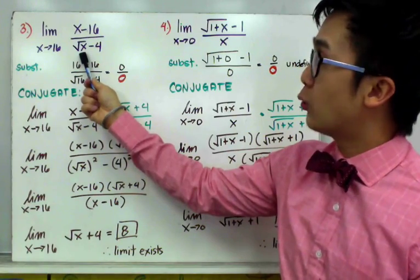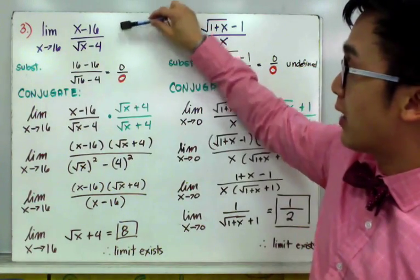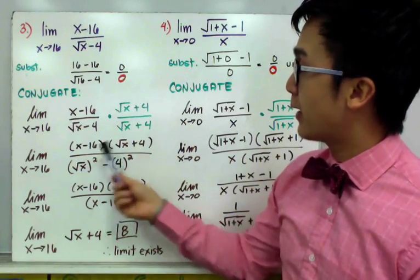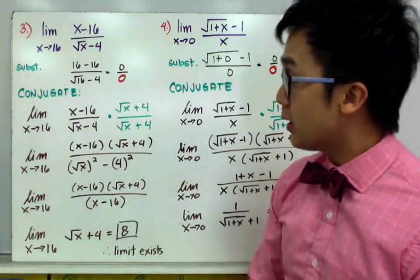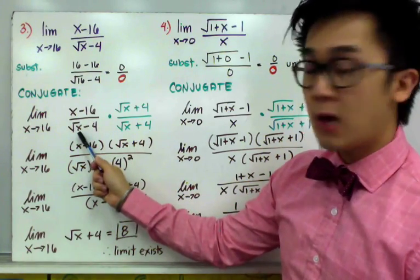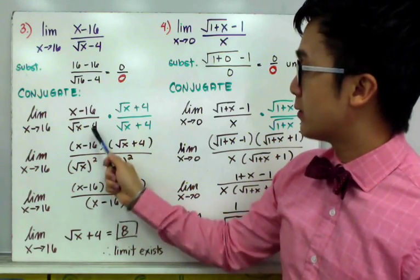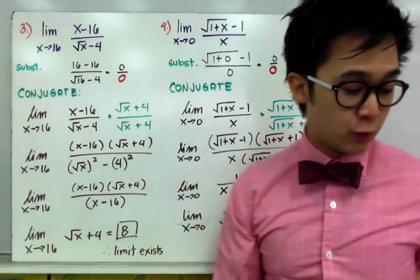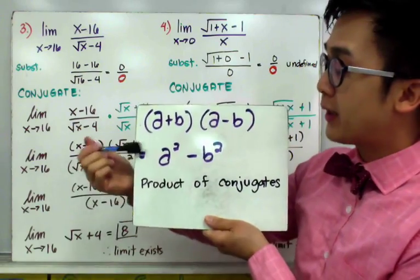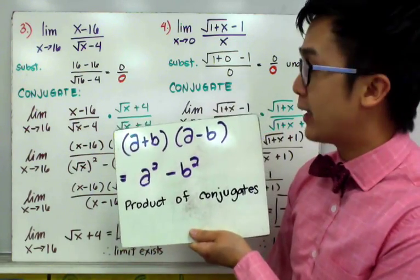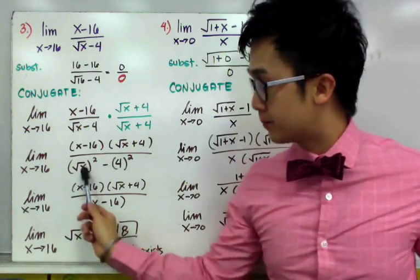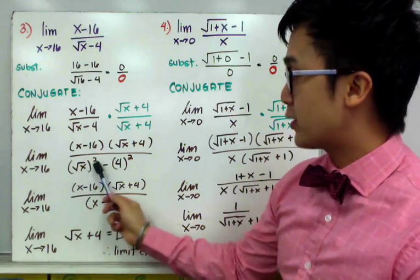Since the radical is in the denominator, we multiply numerator and denominator by the conjugate of square root of x minus 4, which is square root of x plus 4. Multiplying through, the numerator becomes x minus 16 times square root of x plus 4, and for the denominator we use the product of conjugates — a plus b times a minus b equals a squared minus b squared — giving square root of x squared minus 4 squared, which simplifies to x minus 16.